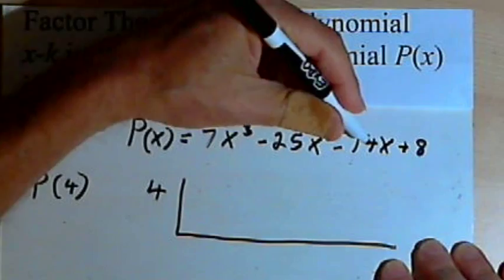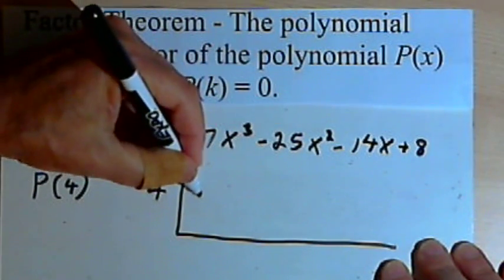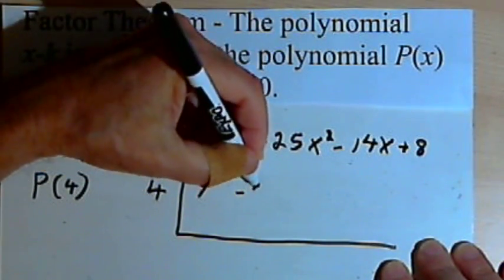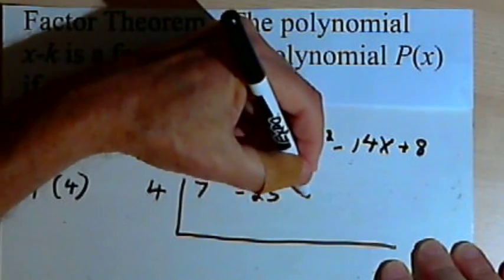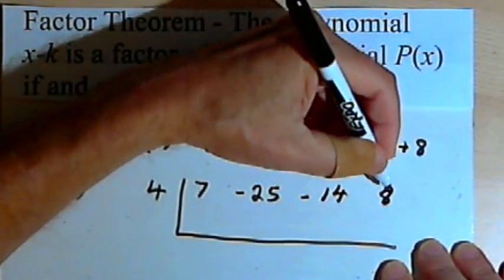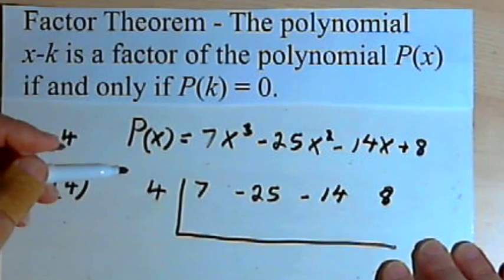All I want to do is take the coefficients of the polynomial. So that's going to be 7, negative 25, negative 14, and 8. And now we'll do the synthetic division.